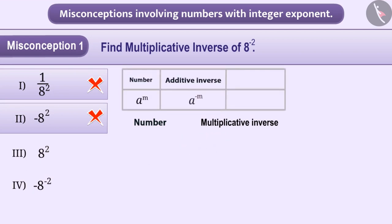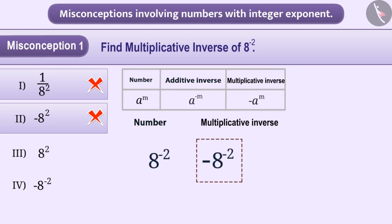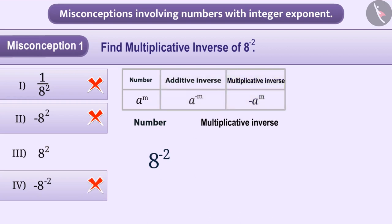Some children also get confused between multiplicative inverse and additive inverse. They consider minus 8 to the power minus 2 as a multiplicative inverse of 8 to the power minus 2 and choose option 4 as the answer. But minus 8 to the power minus 2 is the additive inverse of 8 to the power minus 2, not the multiplicative inverse. So option 4 is also incorrect.